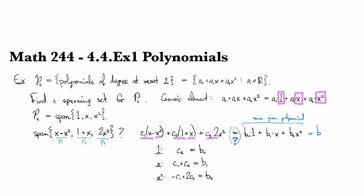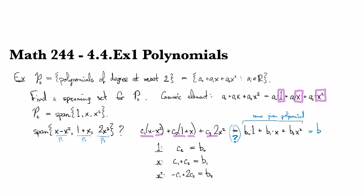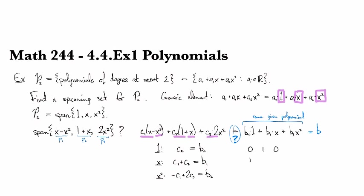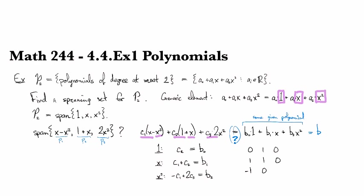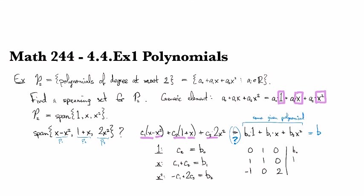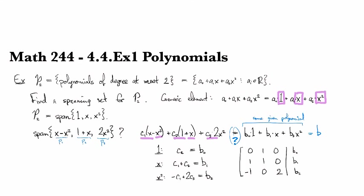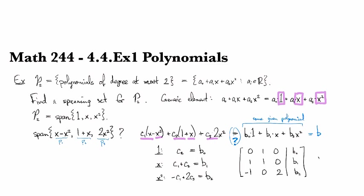Okay. So this boils down now to let's see I've got 0, 1, 0; 1, 1, 0; minus 1, 0, 2 bar b0, b1, b2 and I need to know if this system is consistent.